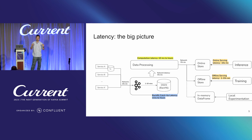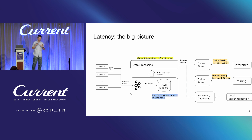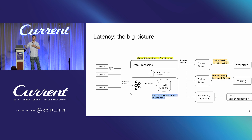We define computation latency as when the initial event reaches the engine and starts processing until the point where a result impacted by that event is emitted to either the online or offline store. For stateless simple processing, latency is essentially the transformation or aggregation you do on that event. For windowing events, it represents the cadence of emission — for example, if you have a session window, the freshness of results is essentially 50% of your session length.